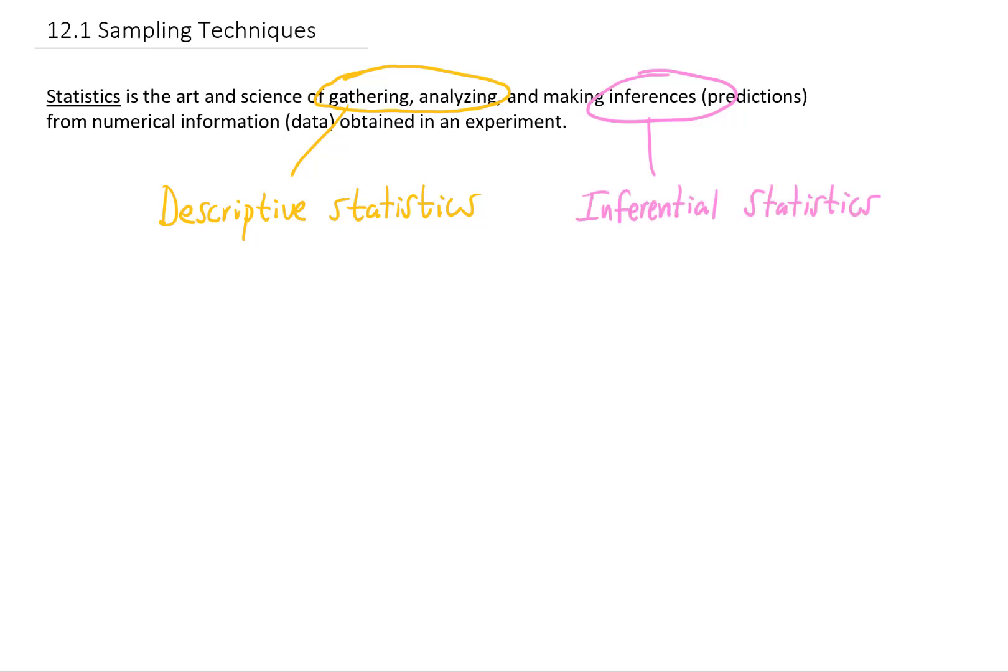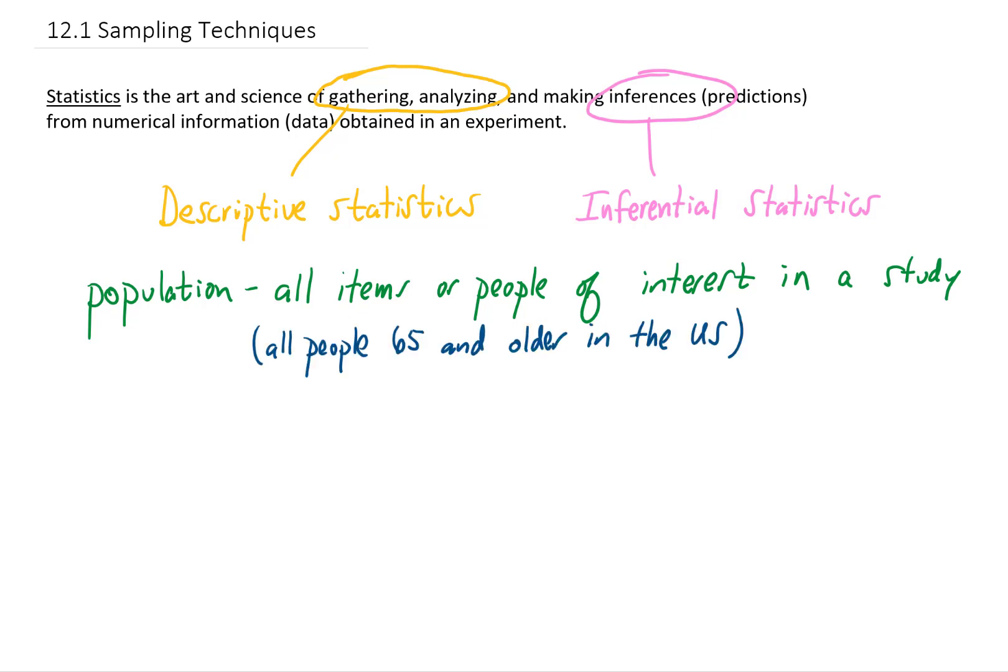When we talk about statistics, there's typically a big group of items or people that we're interested in. We call that our population. For example, if a study is interested in looking at rates of heart disease among people 65 and older in the United States, then our population there would be all people 65 and older in the U.S. If our study is interested in virus death rates for all people in the world, then the population for that study would be all people in the world.